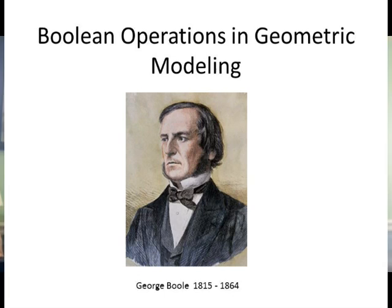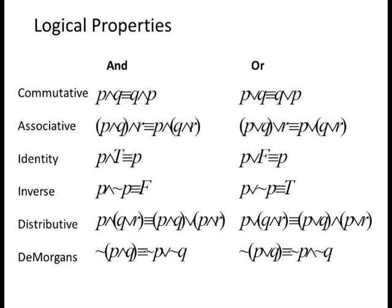Boolean operators are named after George Boole, who first recognized that the set operations union, intersection, and complement could be turned into an algebraic system with properties similar to those of the real numbers.